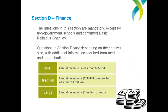A reminder that questions in this section are mandatory except for non-government schools and confirmed basic religious charities. As in previous years, the questions which appear in Section D will vary depending on the size of your charity — small, medium or large — because reporting requirements vary depending on charity size. Answer the charity size question in Section A correctly so that you don't over or under report. You can see the cut-off points which define small, medium and large charities on this slide.